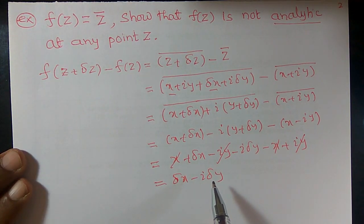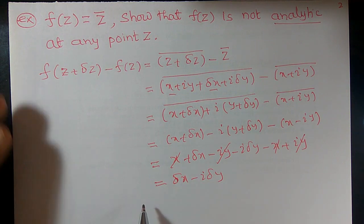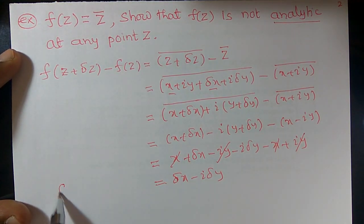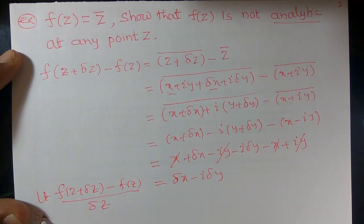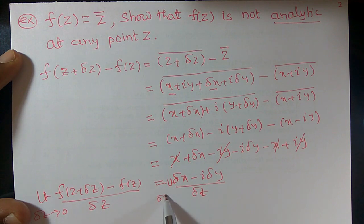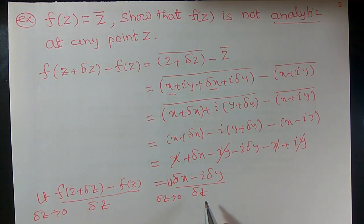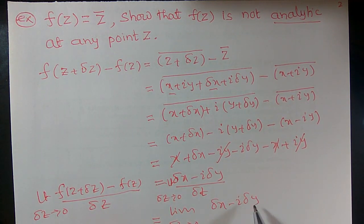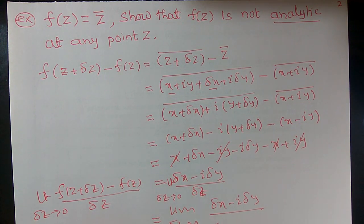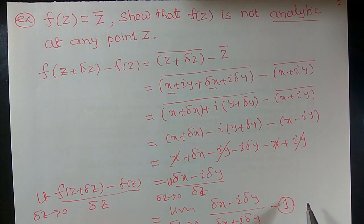Now divide both sides by Δz and take the limit as Δz → 0. The left-hand side is the limit as Δz → 0 of [f(z + Δz) − f(z)] / Δz. The right-hand side becomes the limit as Δz → 0 of (Δx − iΔy) / (Δx + iΔy). I will call this Equation 1.